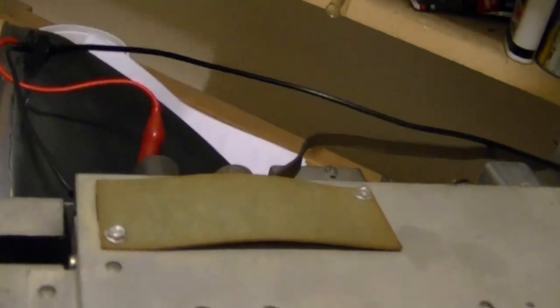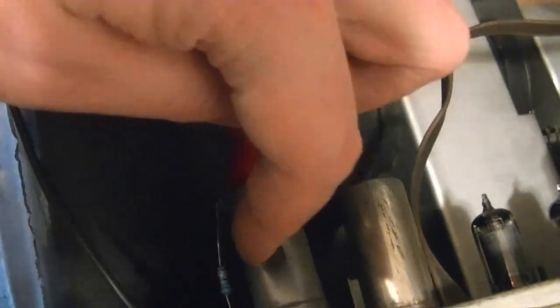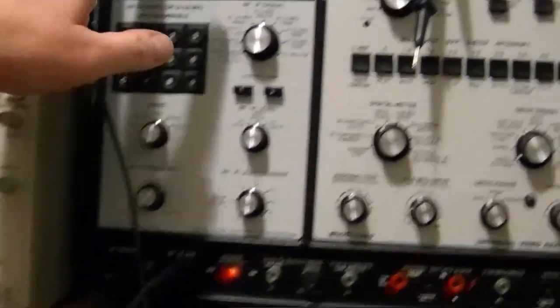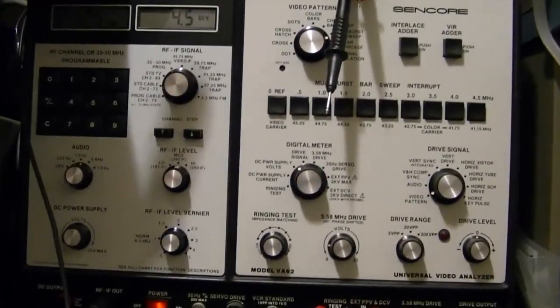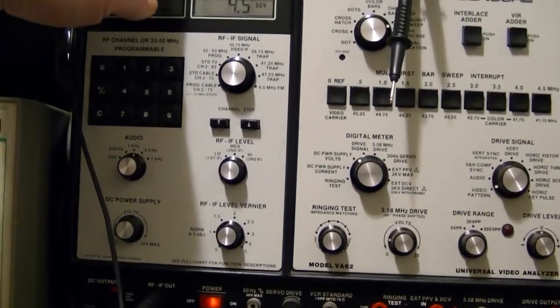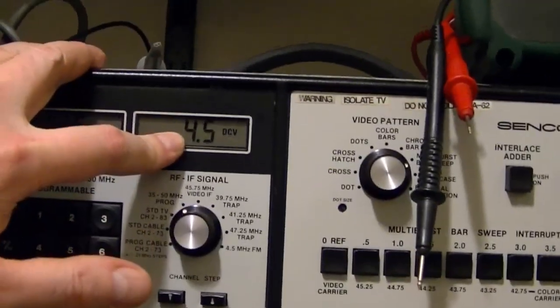Same procedure you've seen me do a bunch of times before. Lift the shield up on the mixer oscillator tube and inject your signal here. I've got a terminating resistor on that. I've got a minus four and a half volt DC bias to knock out the AGC bus. I'm using my VA62 which has a built in DC power supply just for that purpose.